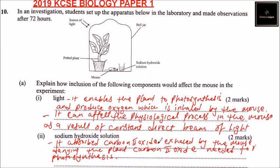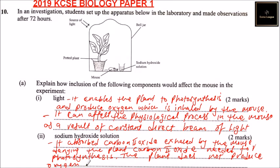So once the sodium hydroxide absorbs the carbon dioxide, the plant does not produce oxygen, because photosynthesis would not take place, and this suffocates the mouse — that is, it doesn't get oxygen which is needed for its survival.